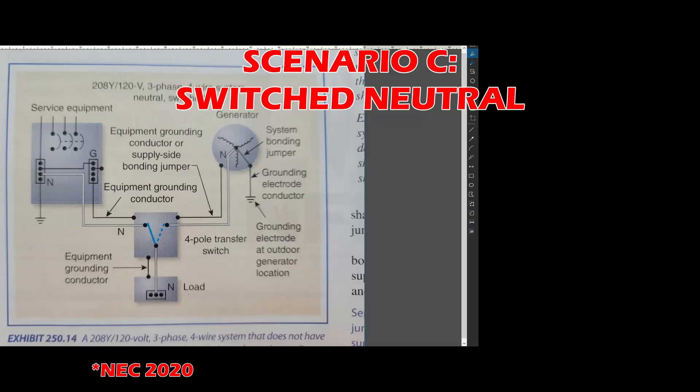In this scenario, the neutral wire gets disconnected completely at the transfer switch. Since the neutral wire gets disconnected, this generator setup is considered as a separately derived system. This means this configuration is treated as two independent electrical systems.